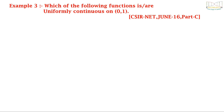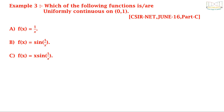Example 3: Which of the following functions is or are uniformly continuous on the interval (0,1)? The options are: A, f(x) = 1/x; B, f(x) = sin(1/x); C, f(x) = x·sin(1/x); and D, f(x) = sin(x)/x. This question was asked in CSIR NET June 2016 Part C.